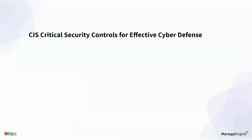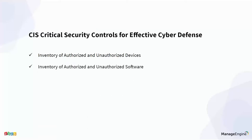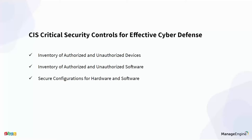Looking at the CIS controls gives us an idea of how to approach security. The first CIS control calls for an inventory of authorized and unauthorized devices — knowing which are your devices and which could be rogue. The second calls for an inventory of authorized and unauthorized applications — which are business applications and which should be restricted. The third is secure configurations for hardware and software, meaning policies for how hardware is handled, software is installed, plugin permissions, version control, and OS hardening.